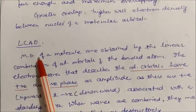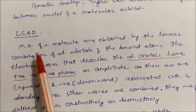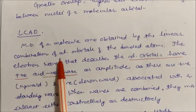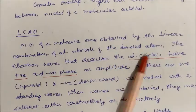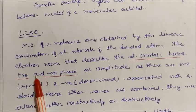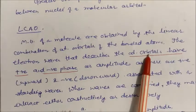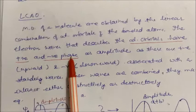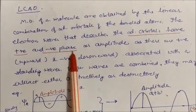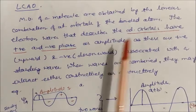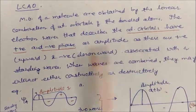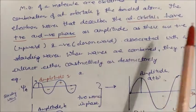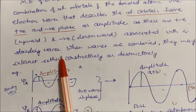Let us understand LCAO in more detail. Molecular orbitals of a molecule are obtained by the linear combination of atomic orbitals of the bonding atoms. The electron waves describing atomic orbitals have two phases — one positive, one negative — or you can say positive amplitude which is upward and negative amplitude which is downward. This is associated with standing waves.